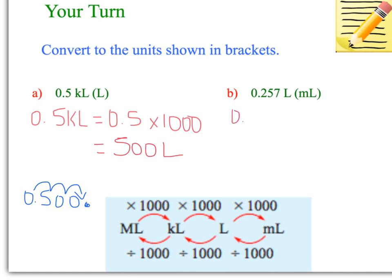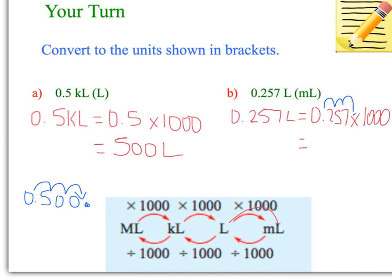Next: 0.257 litres to millilitres — we know it's millilitres because it has a little m. Converting litres to millilitres, we multiply by 1,000. Moving the decimal point right three places puts it after the 7, so the answer is 257 millilitres. Hopefully you got those answers correct.